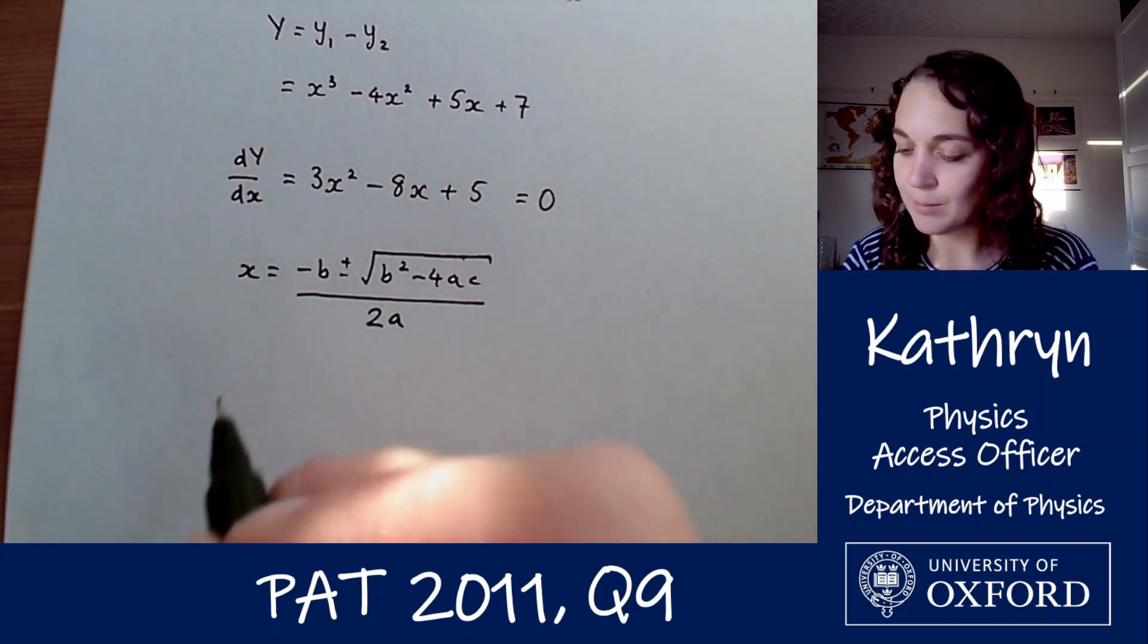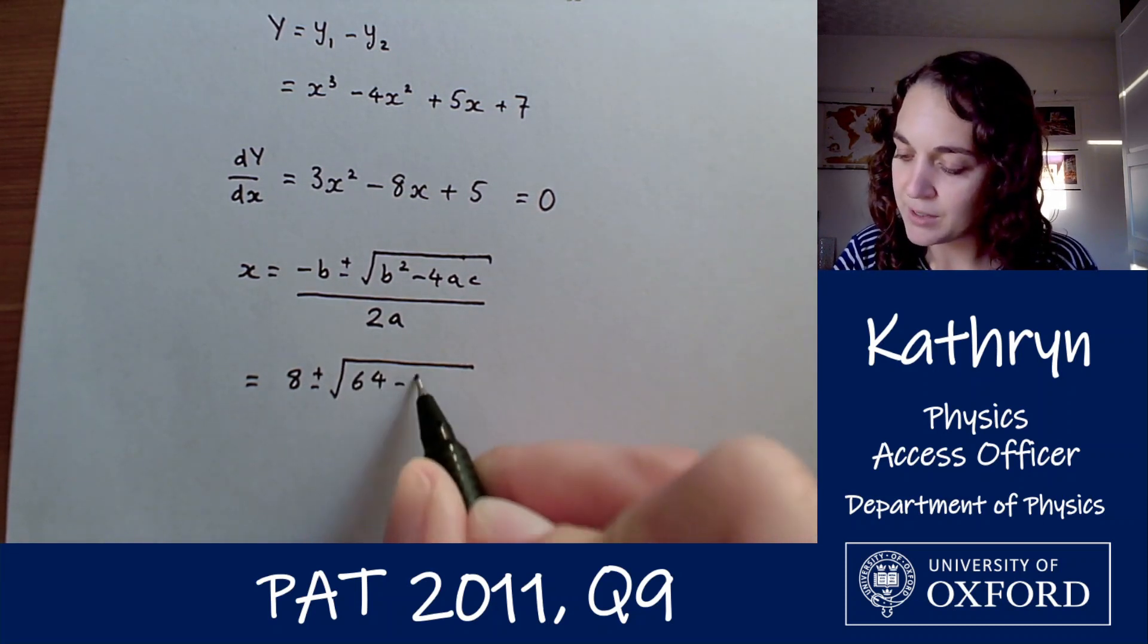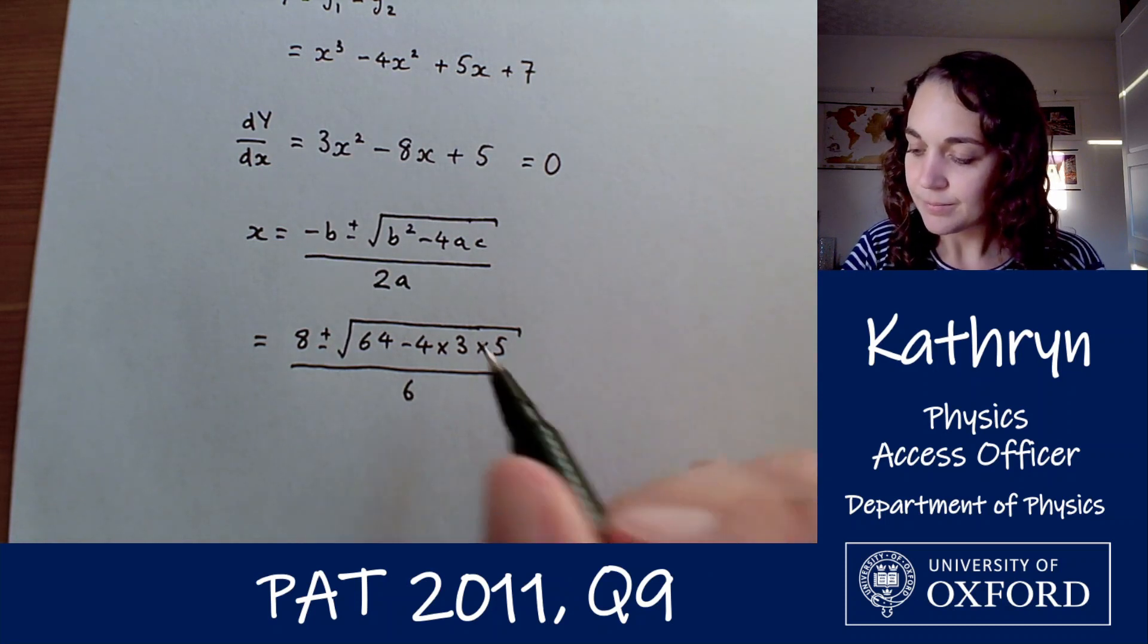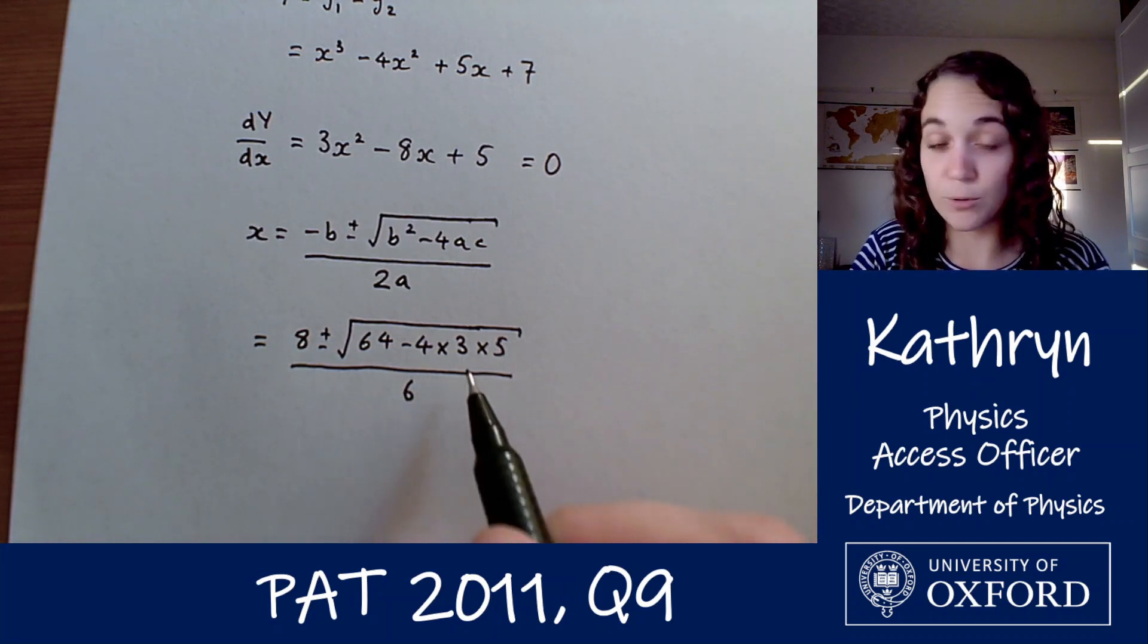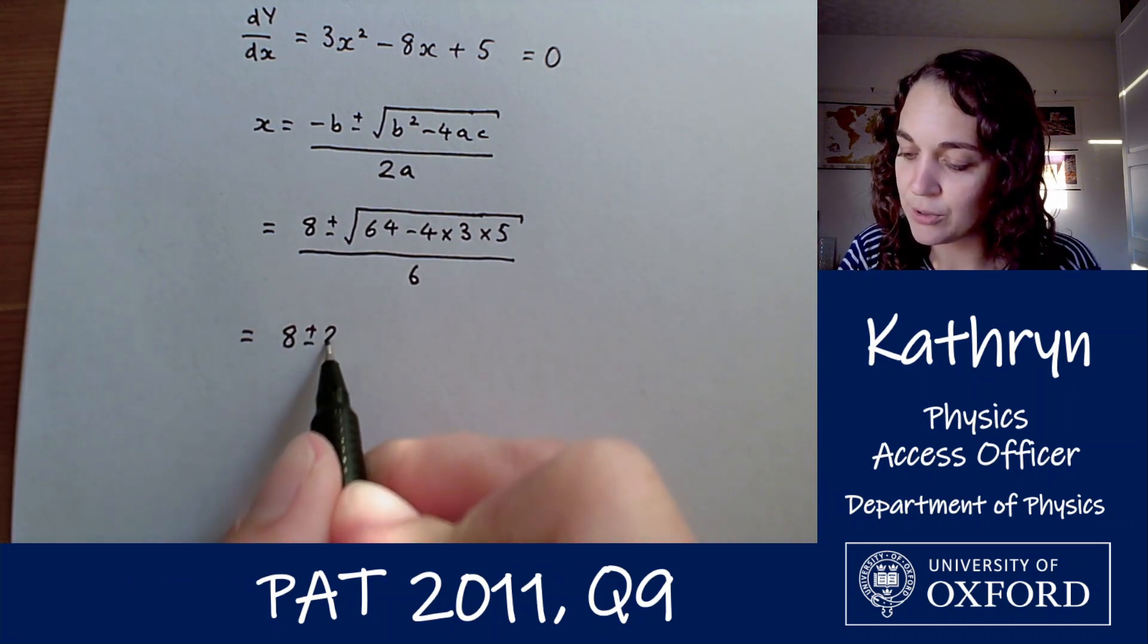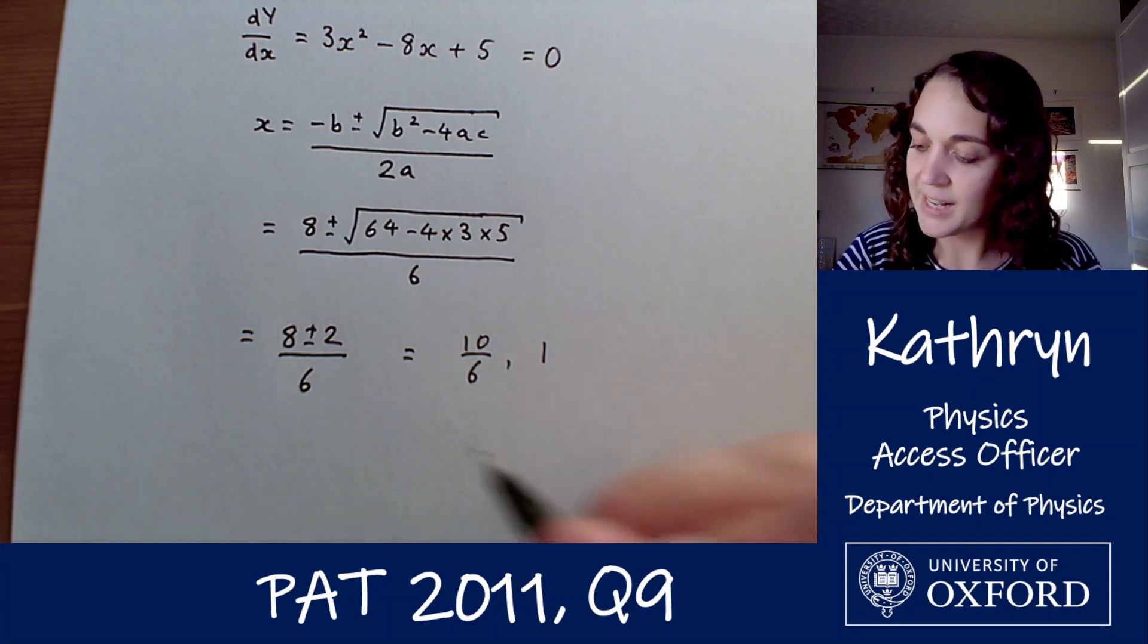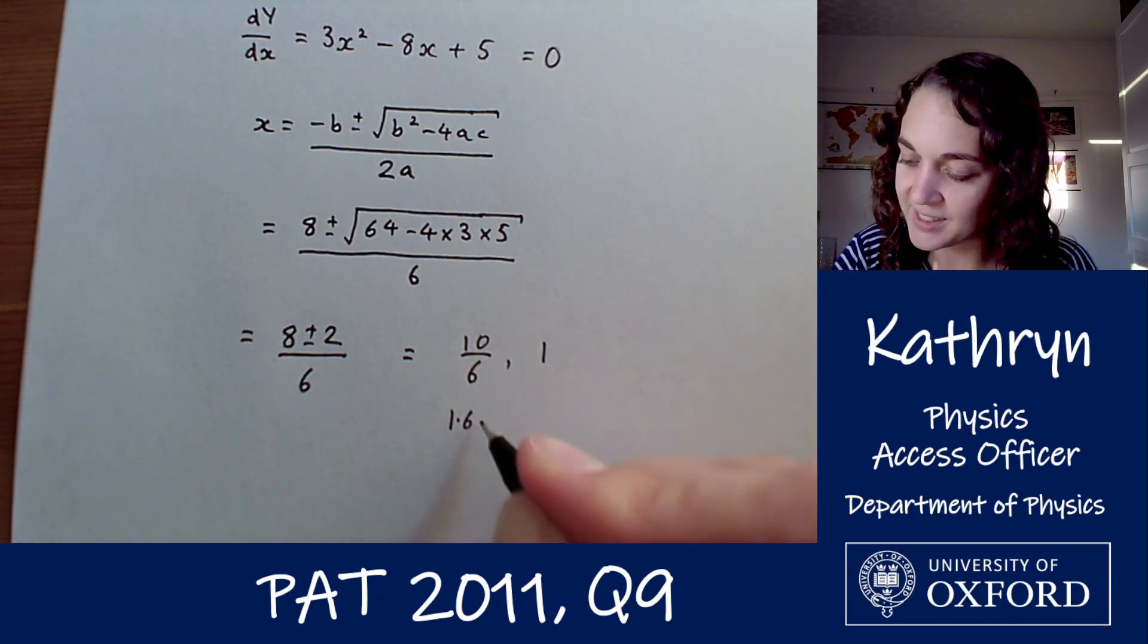So substituting that in we have 8 plus or minus the square root of 64 minus 60, all divided by 6. The square root of 4 is 2, so we've got 8 plus or minus 2 over 6. So our two answers are going to be 10 over 6 or 6 over 6 so that's just 1. And 10 over 6 is 1.67 and 1.